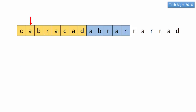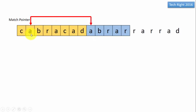Here is the example sequence we have to encode: C A B R A C A D A B R A R R A R R A D. We use a match pointer to match the character in the look-ahead buffer with the search buffer. When a match is found, the distance between the look-ahead buffer and the search buffer match pointer is called the offset.